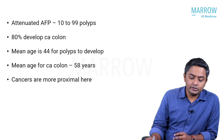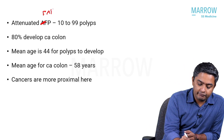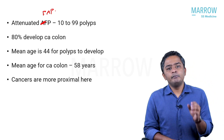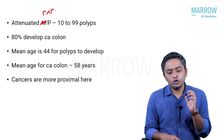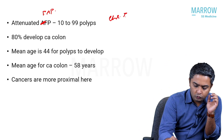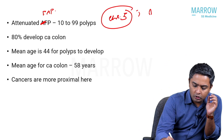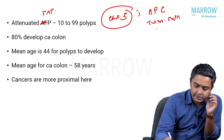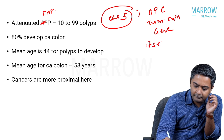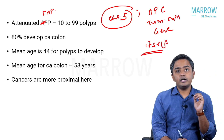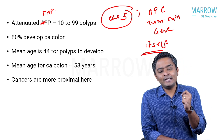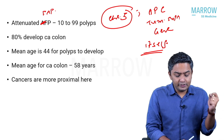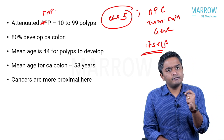What about the attenuated FAP? It is very similar to classic FAP. The mutation happens on chromosome number five, on the APC tumor suppressor gene itself. Genetics is the same, but the locus is a little different — not on the same locus of the gene as for classic FAP. In attenuated FAP, there is a mild difference in the locus.